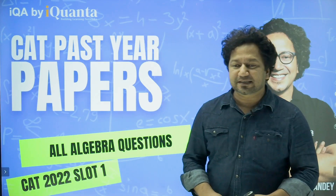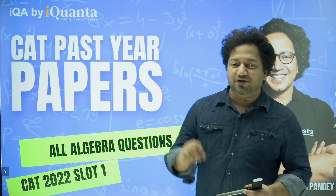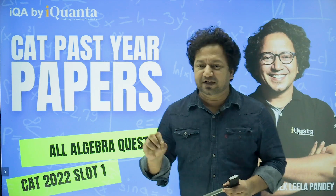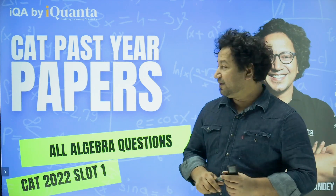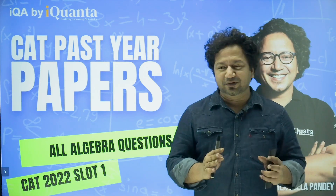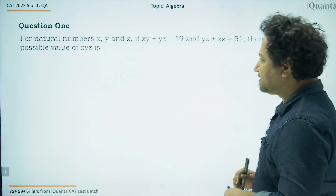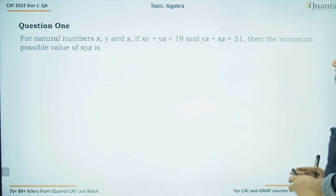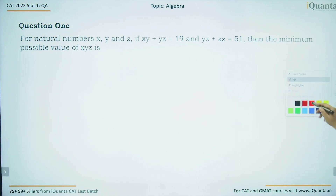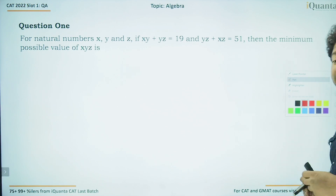Hello and welcome to iQuanta. Today I will be discussing all the algebra questions from CAT 2022 Slot 1. We will be discussing some really cool solutions for all the algebra problems. Let us start with the first question. For natural numbers x, y and z, if xy + yz = 19 and yz + xz = 51, then the minimum positive value of xyz is what.